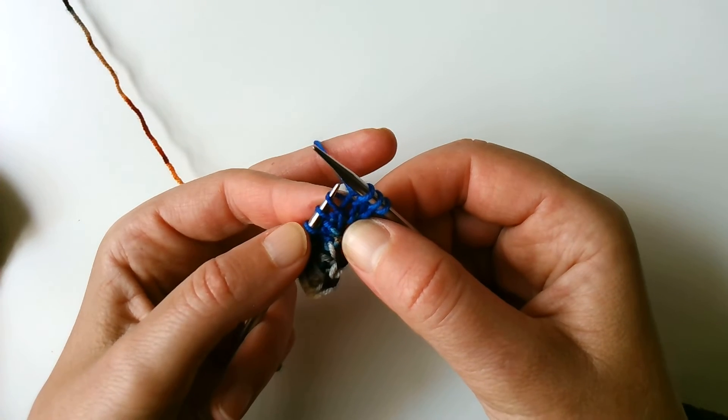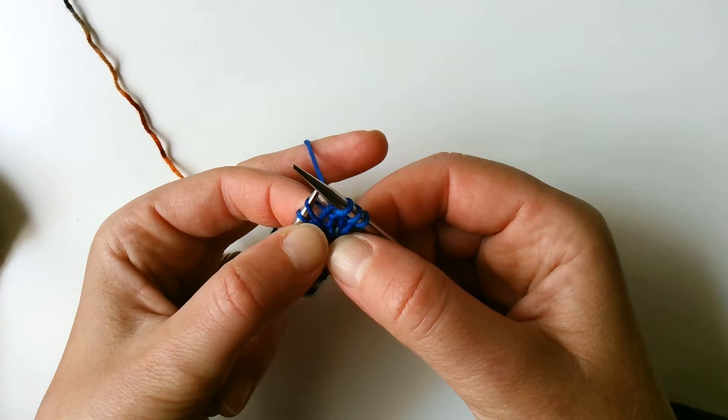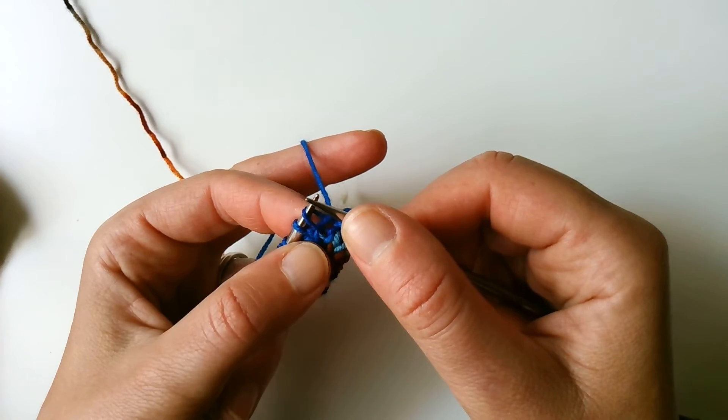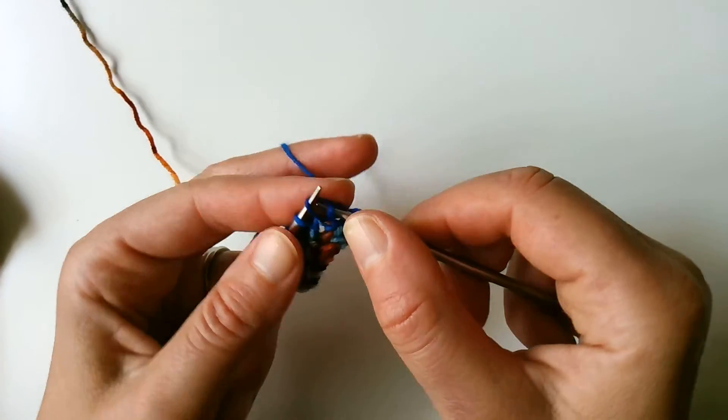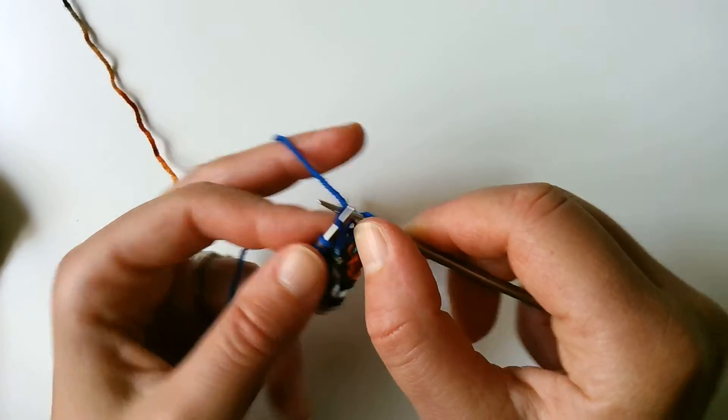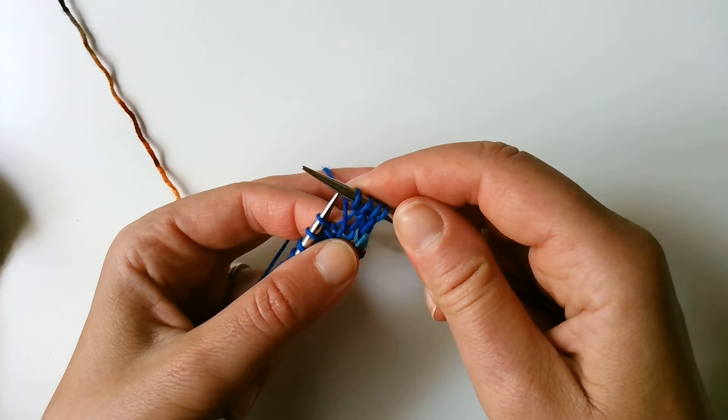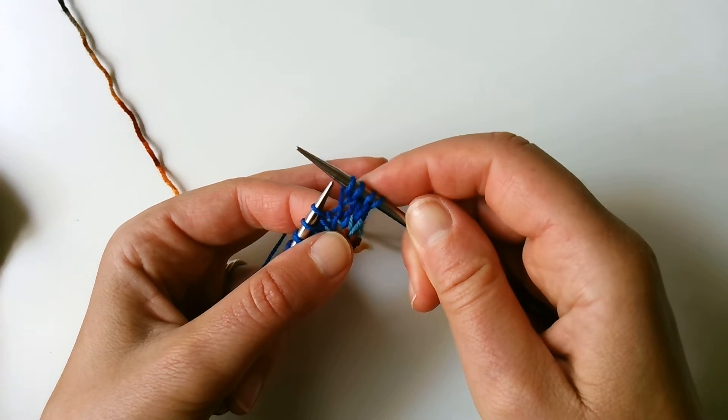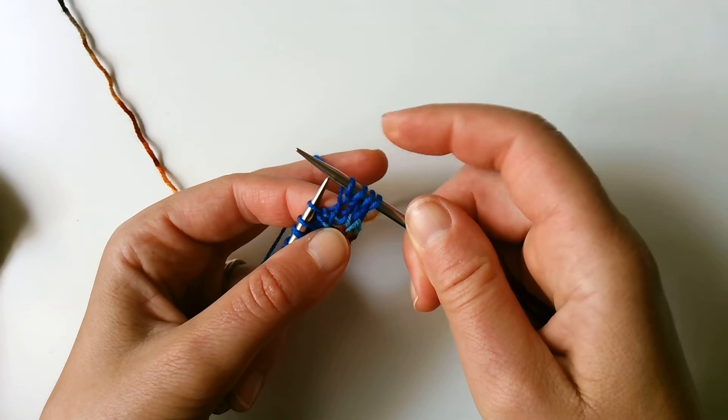So now I've kind of got that left leg of the stitch on my left needle and I can just knit into the back of that. I wouldn't want to twist it or anything, but I'll just knit into it. So then it looks like two stitches are kind of just appearing out of there.